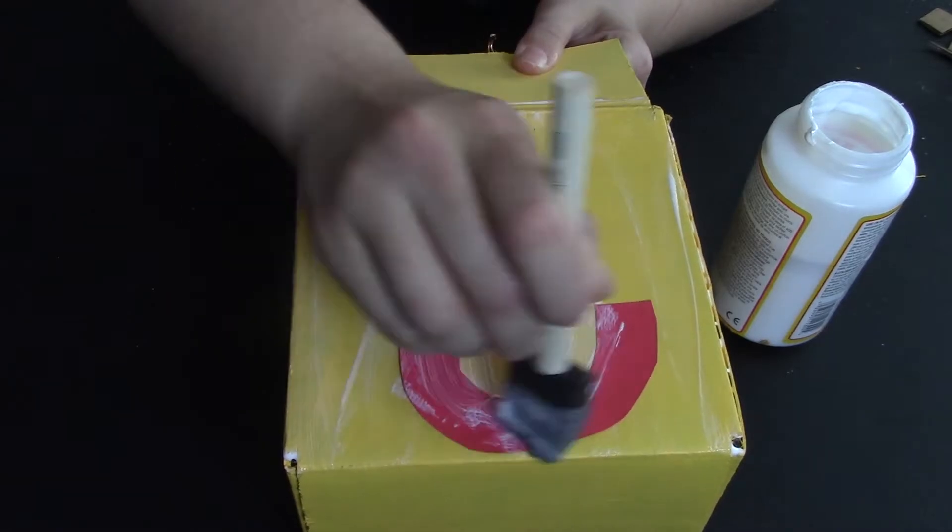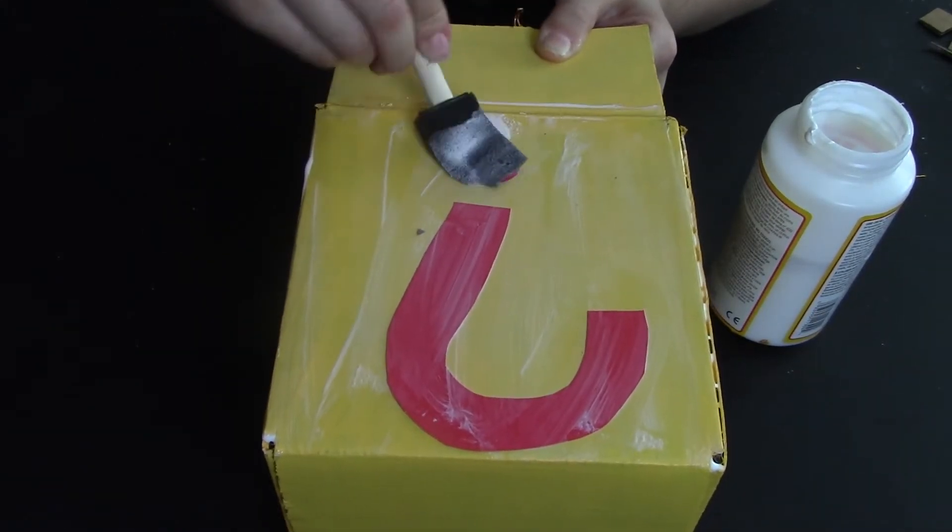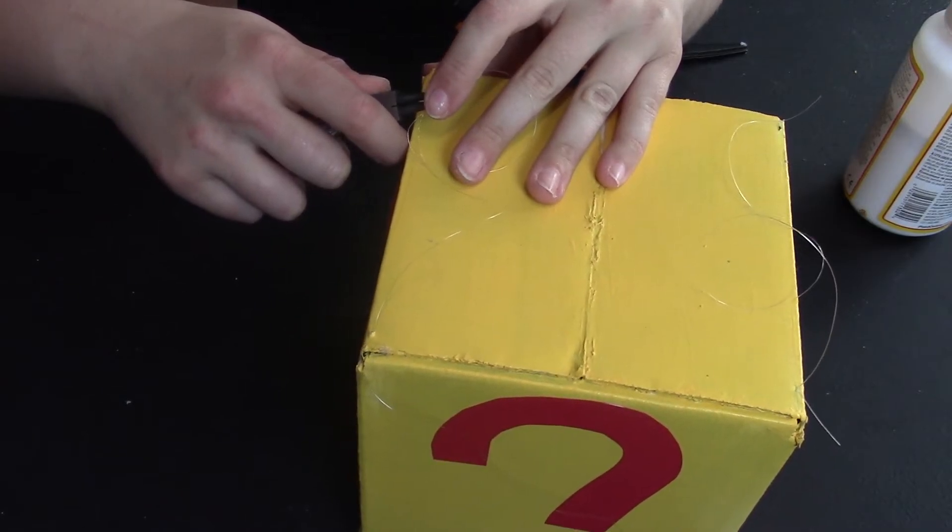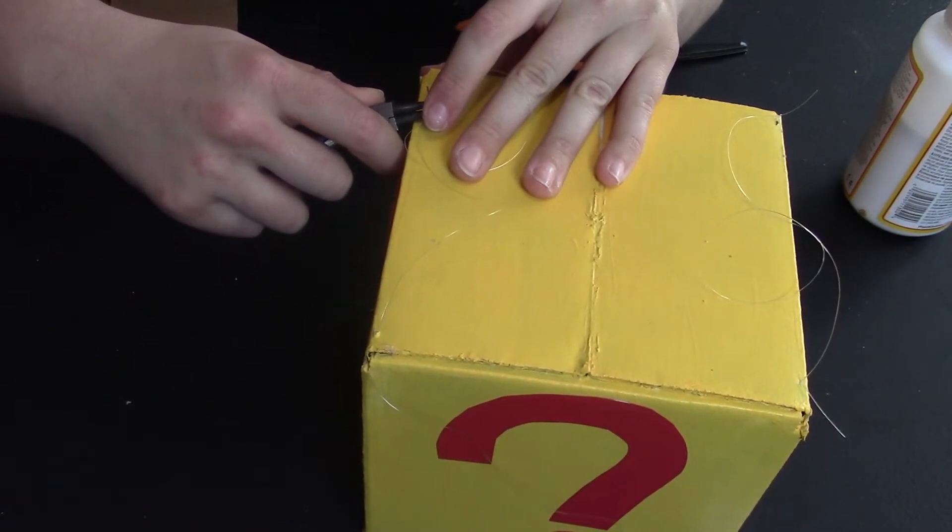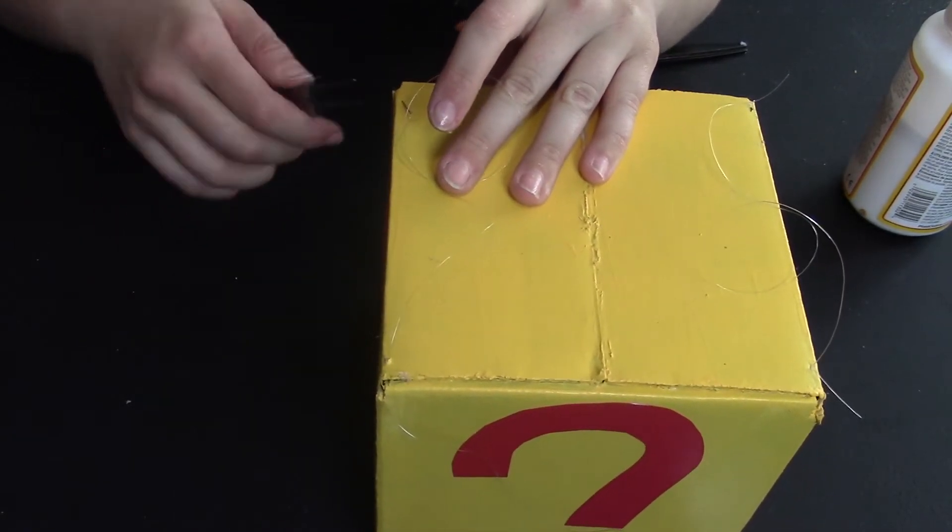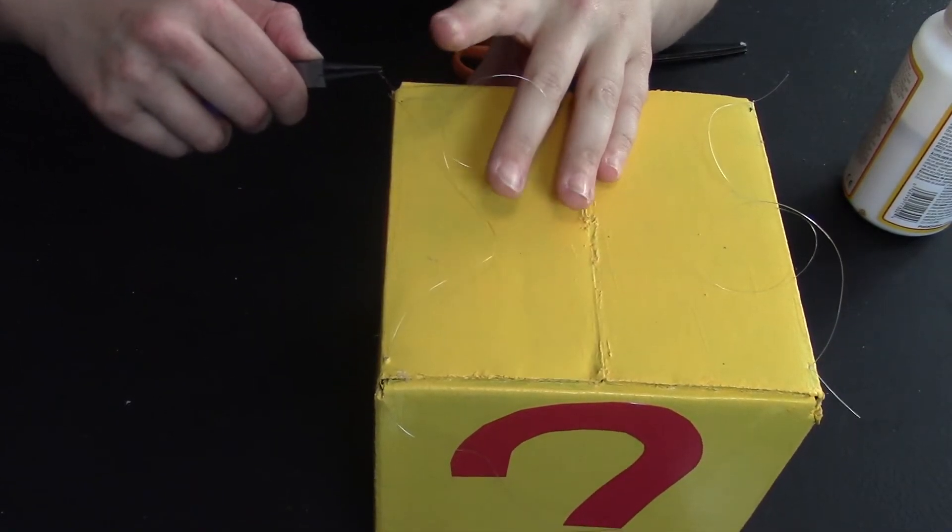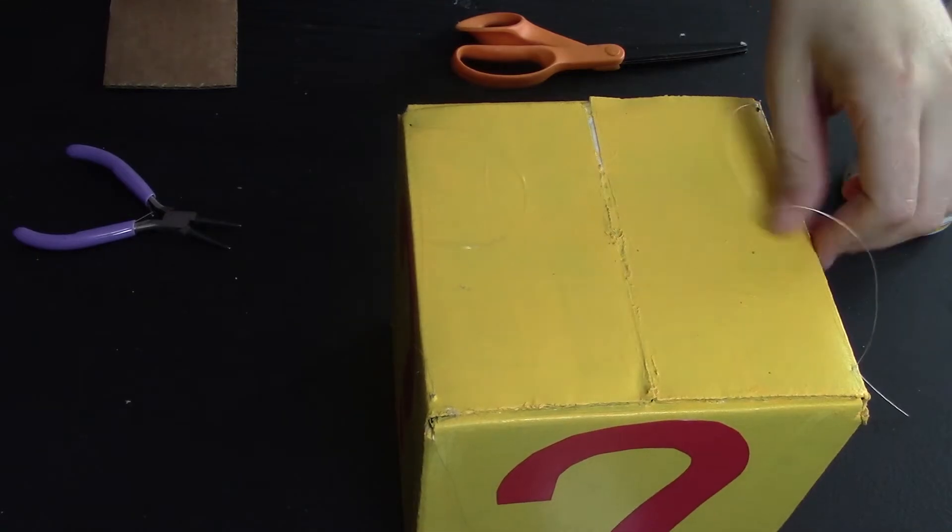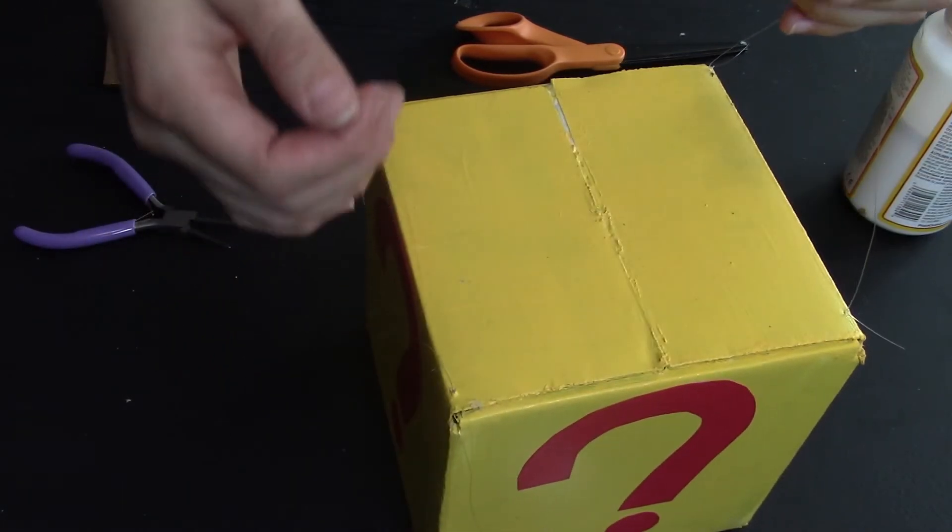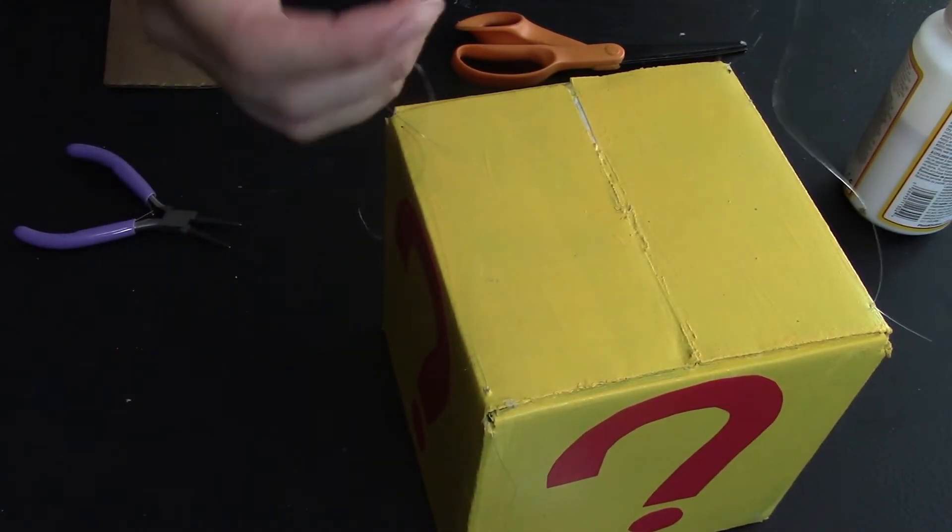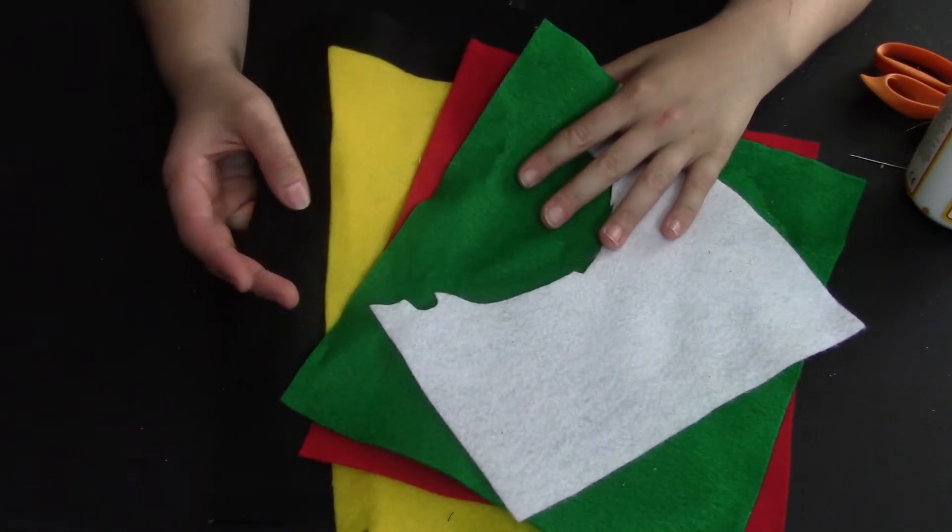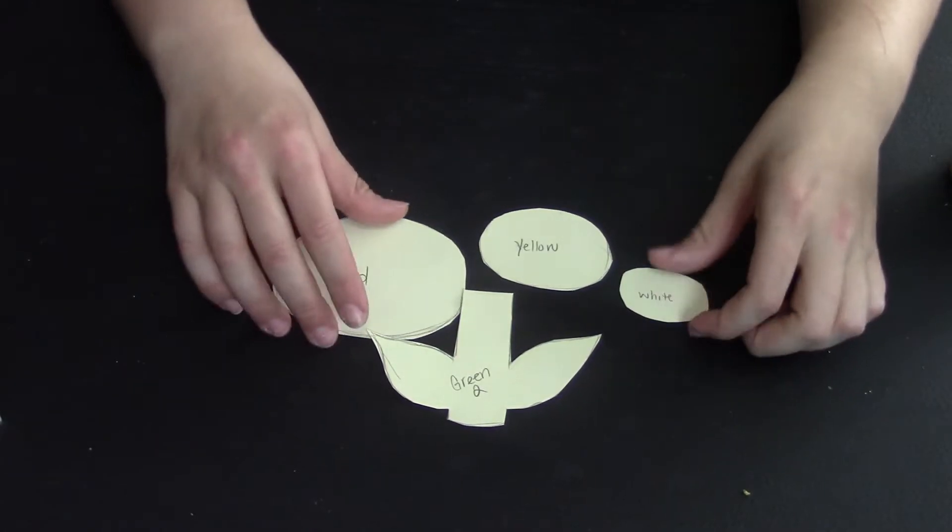Go ahead and Mod Podge that on while you Mod Podge your box. If you want to hang this up, add some fishing string to it. On each side you're going to want some on all four corners to meet together and you can hang it up.